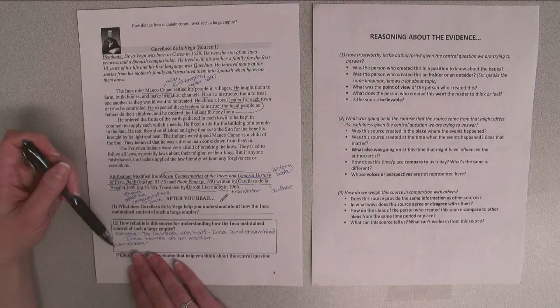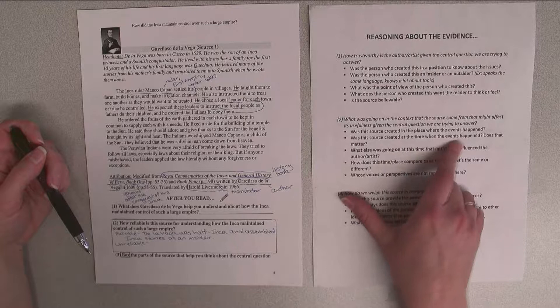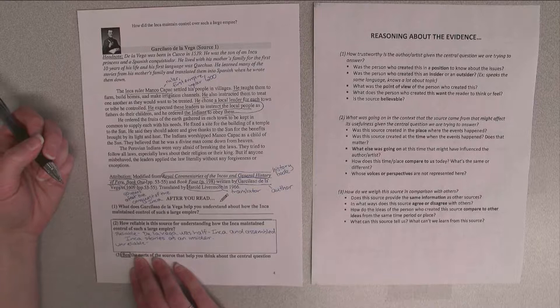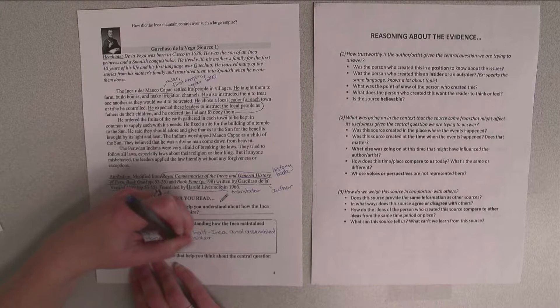Now I want to think about how could this source be unreliable? And so this question says, was the source created at the time when the events happened? So I know this source was created in 1609, but that he's talking about someone that lived in 1200. So that's about 400 year difference.